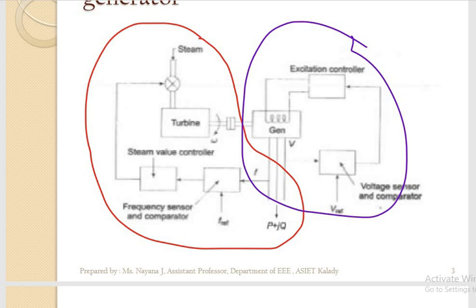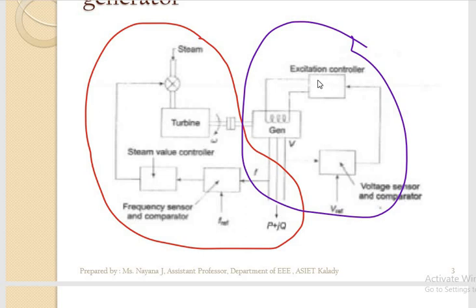What do we mean by excitation of a generator? For a generator to work, it should have a magnetic field. That magnetic field is provided by the field winding, and for providing the magnetic field, that field winding needs to be connected to a DC supply. For that we use an exciter. So that magnetic field is provided with the help of an exciter. By controlling that exciter voltage, the magnetic field is controlled and indirectly the output voltage is also controlled. So to control the output voltage of the generator, we control the exciter voltage.